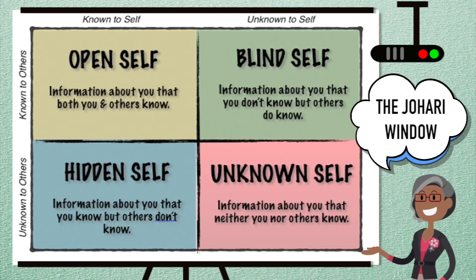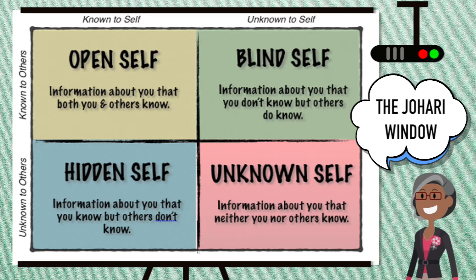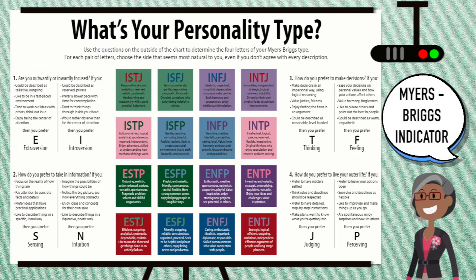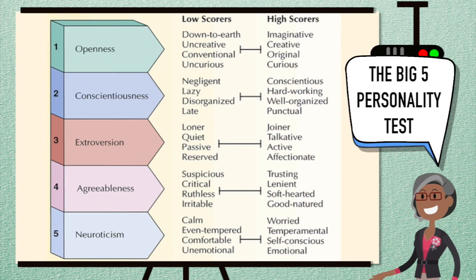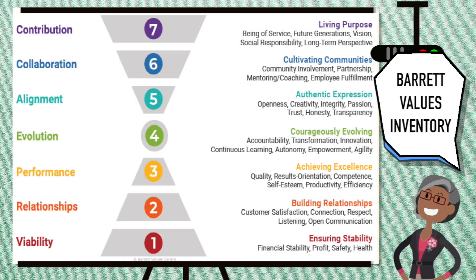The Johari window uses adjectives to illustrate hidden and open parts of the self. Myers-Briggs inventory offers individual personality profiles. The Big Five personality test places five core traits on a scale. Barrett's value inventory assesses personal values through a common list of adjectives.